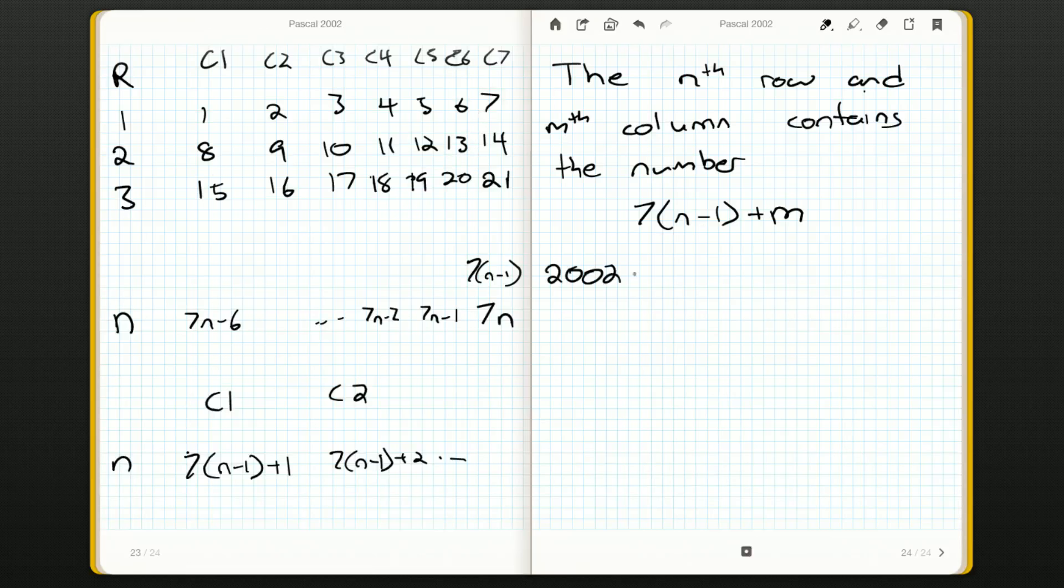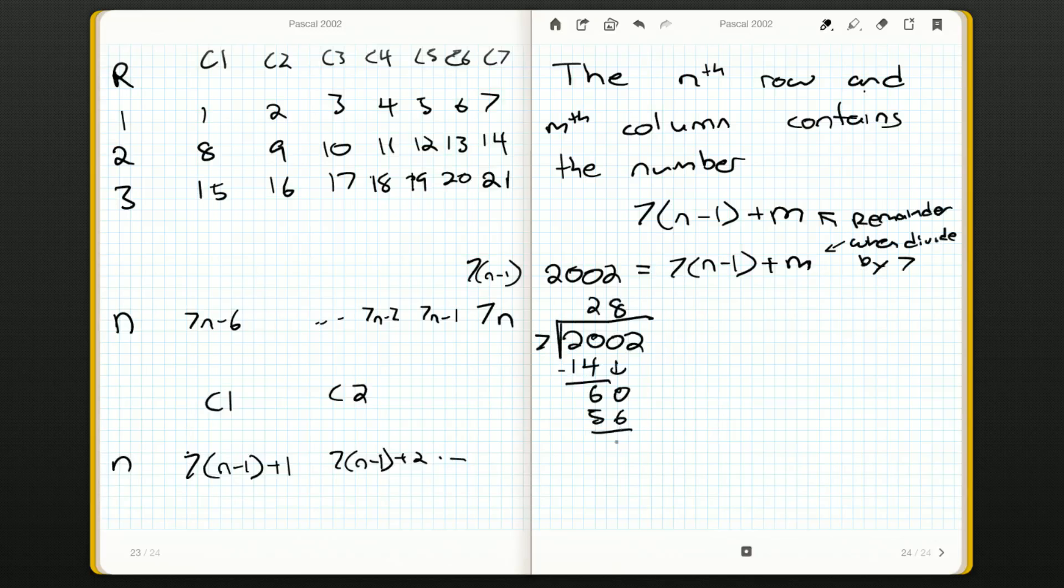So now we know, we're told that 2002 is going to be in the Nth row, Mth column. So let's work out what this is. So M is the remainder when we divide by 7. Well, what's the remainder when we divide 2002 by 7? 7 goes into 20 twice. 14, 6. Bring down the 0. How many times does 7 go into 60? 8. That's 56. And 42. 7 goes in there exactly 6 times. So it is a multiple of 7. So we would think the remainder is 0, but we don't have a column 0. So M is going to be equal to 7 in this case.